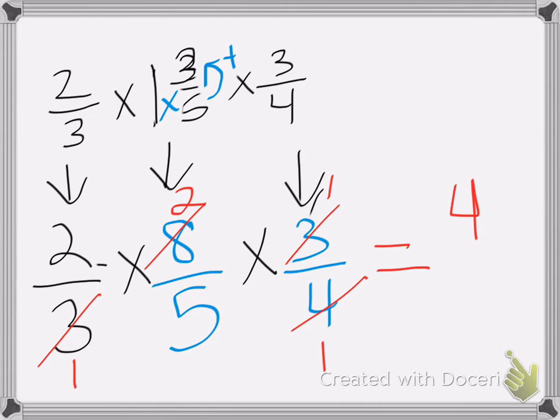2 times 2 is 4, 1 times 5 times 1 is 5. So my answer is 4 fifths.